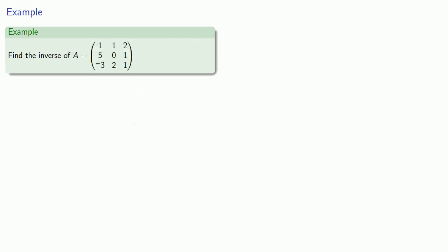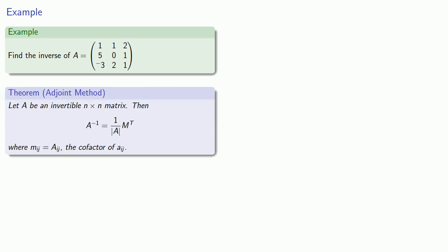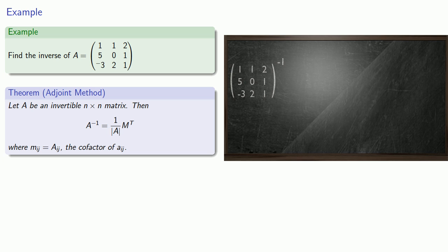What if we want to find the inverse of a 3 by 3 matrix? As before, the inverse will be the transpose of the matrix of cofactors multiplied by the reciprocal of the determinant. For reasons that will become apparent, we'll calculate that determinant last. We'll set up our checkerboard of plus and minus, and find our minors.